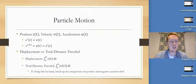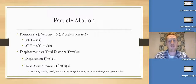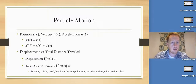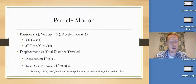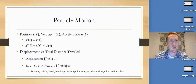The ideas we need to have: if position is s(t), velocity is v(t), and acceleration is a(t), then s' is v, s'' is the acceleration, which is also v'. So the derivative of velocity is acceleration, and the second derivative of position is acceleration.